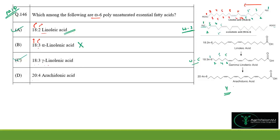Arachidonic acid (20:4) has four double bonds at positions 5, 8, 11, and 14 from the carboxyl end. Numbering from the methyl end, the first double bond falls at position 6, making arachidonic acid also an omega-6 fatty acid. Therefore options A, C, and D are all correct answers.